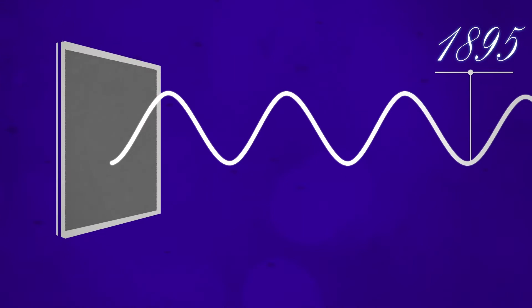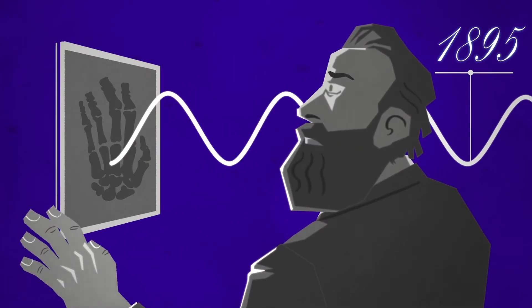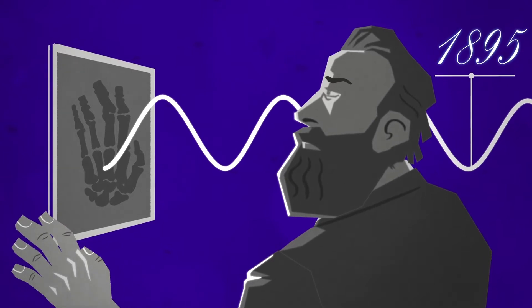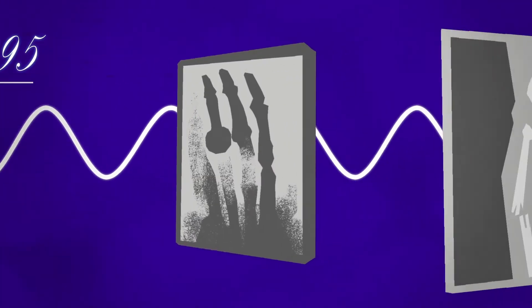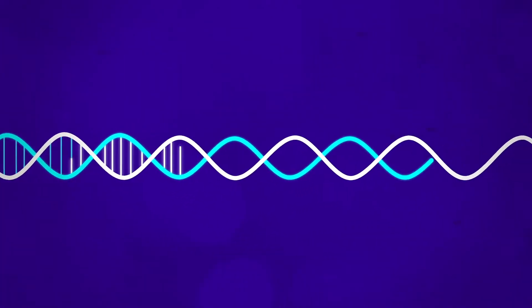In 1895, Wilhelm Röntgen discovered X-ray radiation. This discovery suddenly allowed us to see inside the body, checking for broken bones, lung infections, and even helped us understand what our DNA looks like.